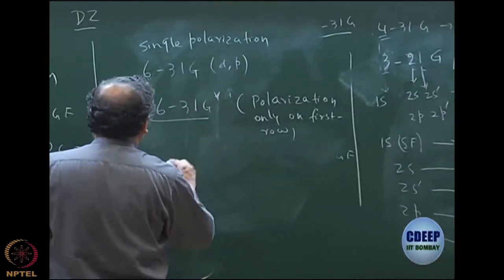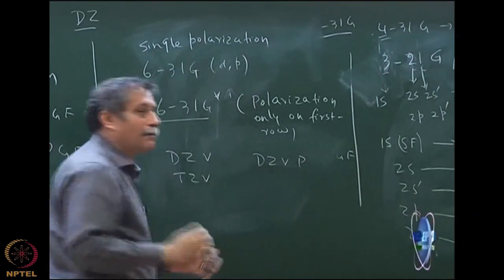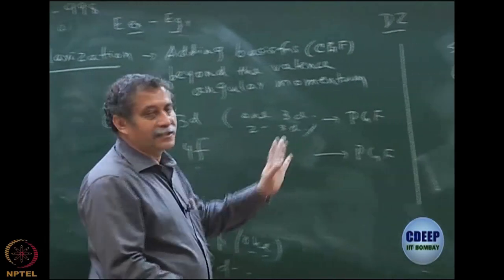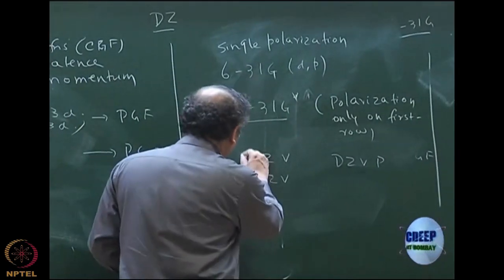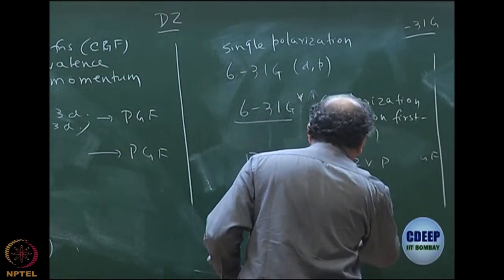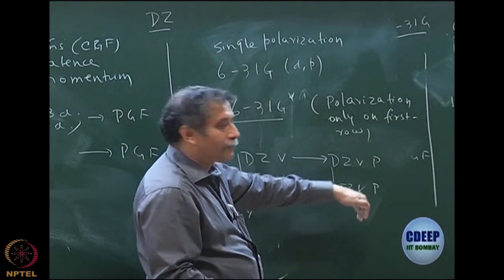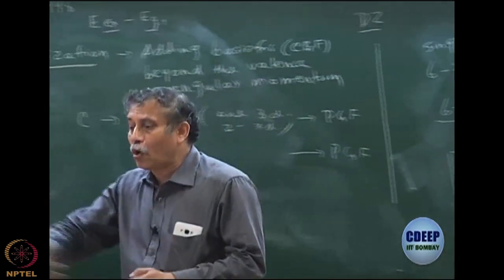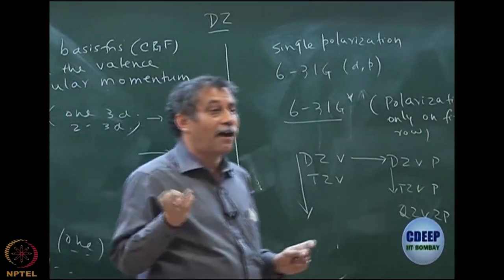At this point, I have two choices: double zeta valence, or double zeta valence with polarization. Let us say I want to make it triple zeta valence — I add one more S function and one more P function — or should I add polarization instead? If you do both, that is ideal. But if you cannot do both, there is a question of balance. Many feel that instead of just extending valence, you should first add polarization, then extend zeta. So TZVP will be very good. You go from DZV to DZVP, then to TZVP. For quadruple zeta, you must use true polarization — two polarization functions.